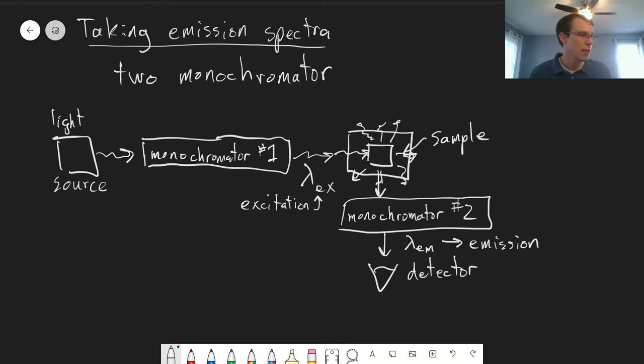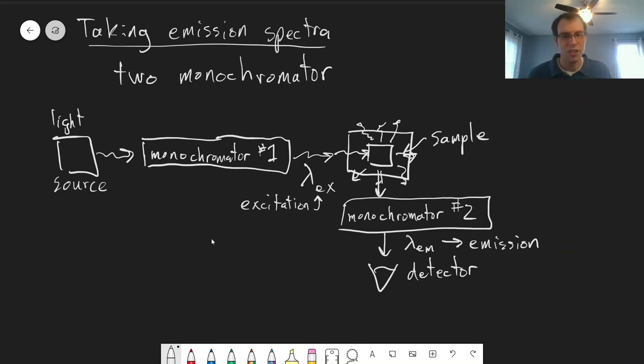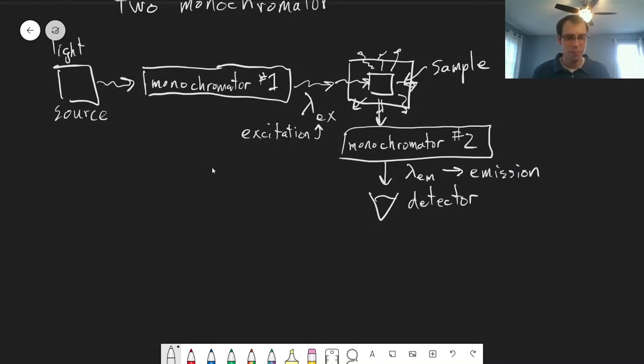So there are two different ways we can measure our spectra. One is that we can fix the excitation wavelength, meaning that we pick one specific value and just leave it at that. And then we scan over, using our second monochromator, different values of lambda em, different emission wavelengths. This is what's known as an emission spectrum.